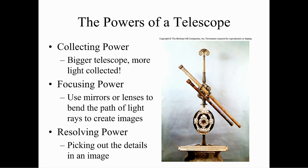The powers of a telescope — you probably didn't know a telescope had powers. First, collecting power: the bigger the telescope, the more light it collects. Then we have focusing power — that's using mirrors or lenses to bend the path of light rays to create images. And then resolving power, which helps us to pick out details. A high resolving power means you'll be able to see the craters on the moon better.